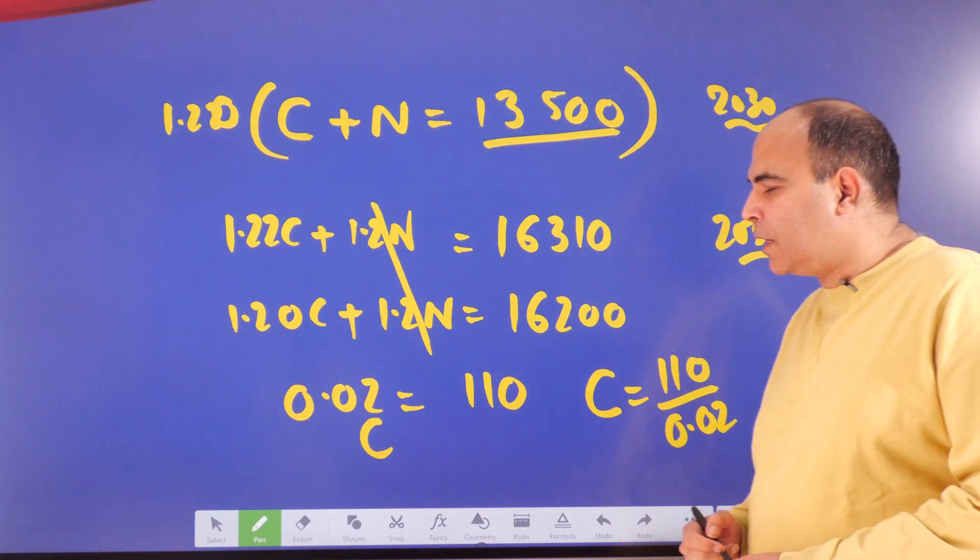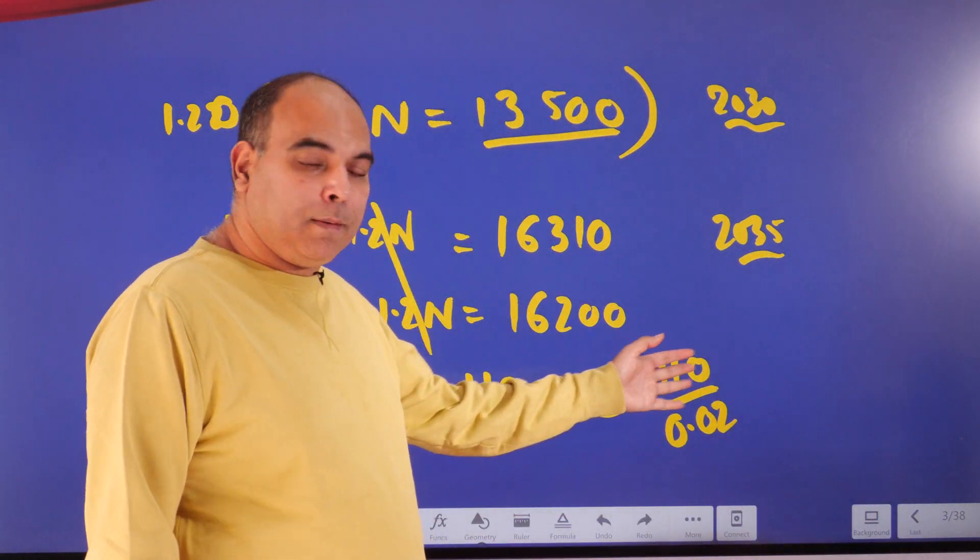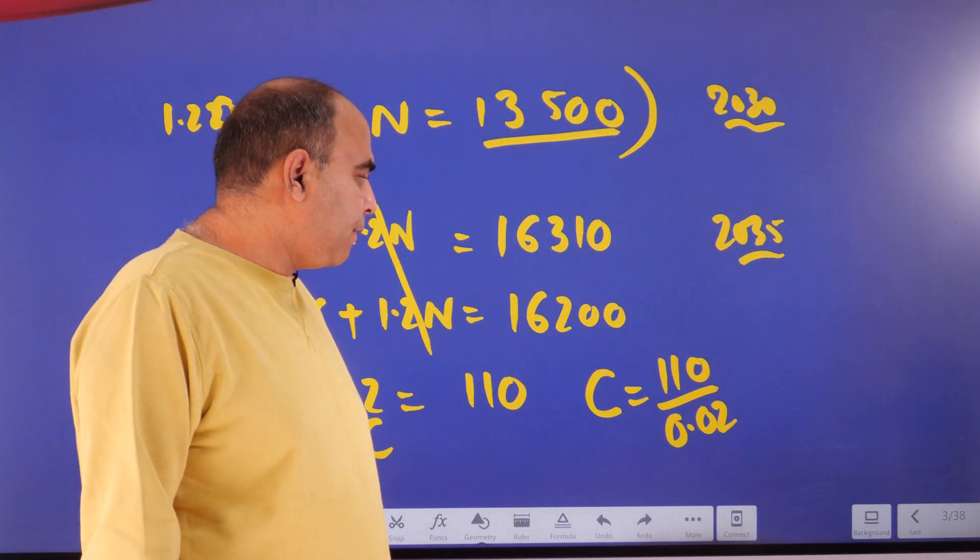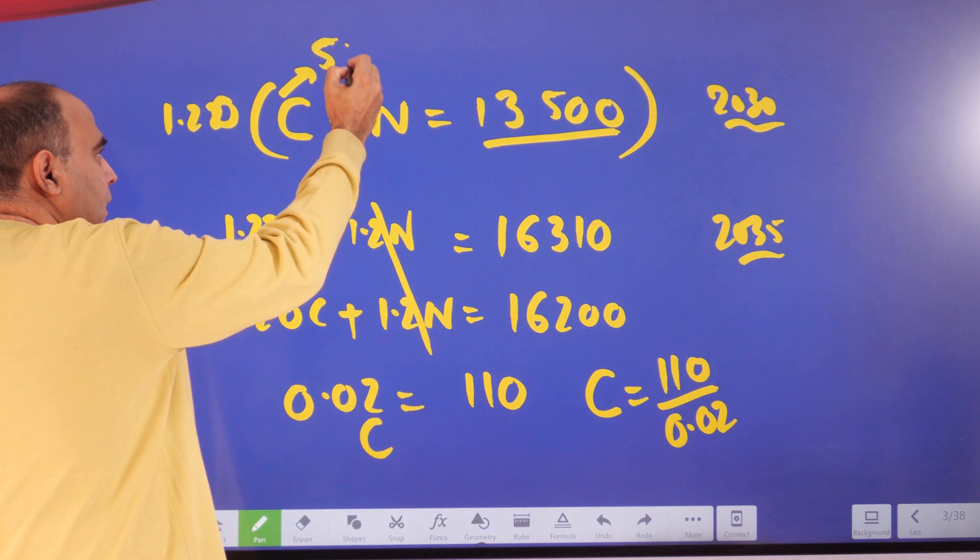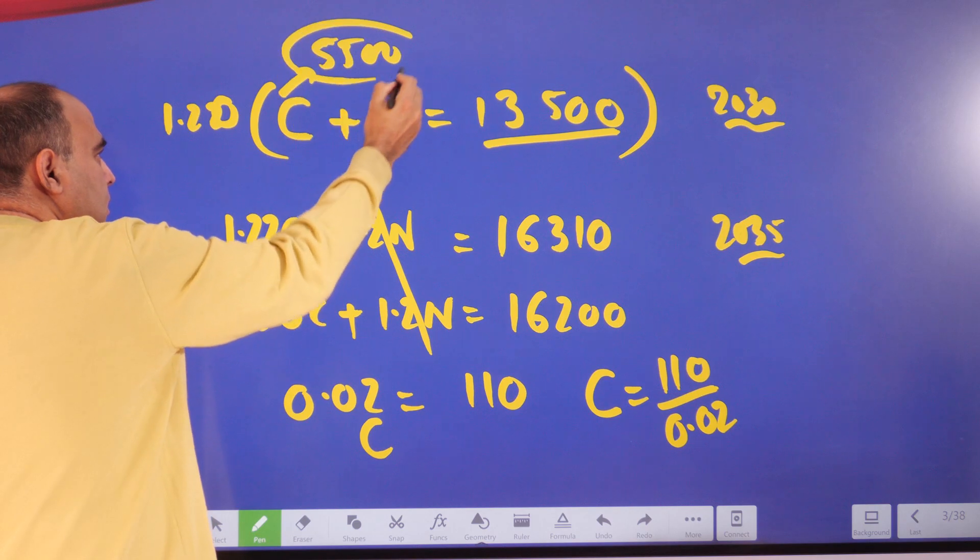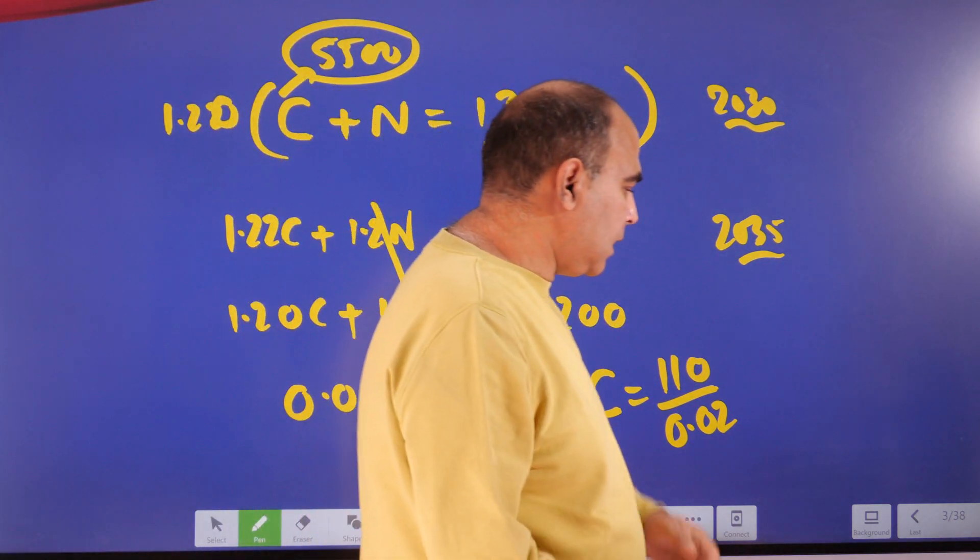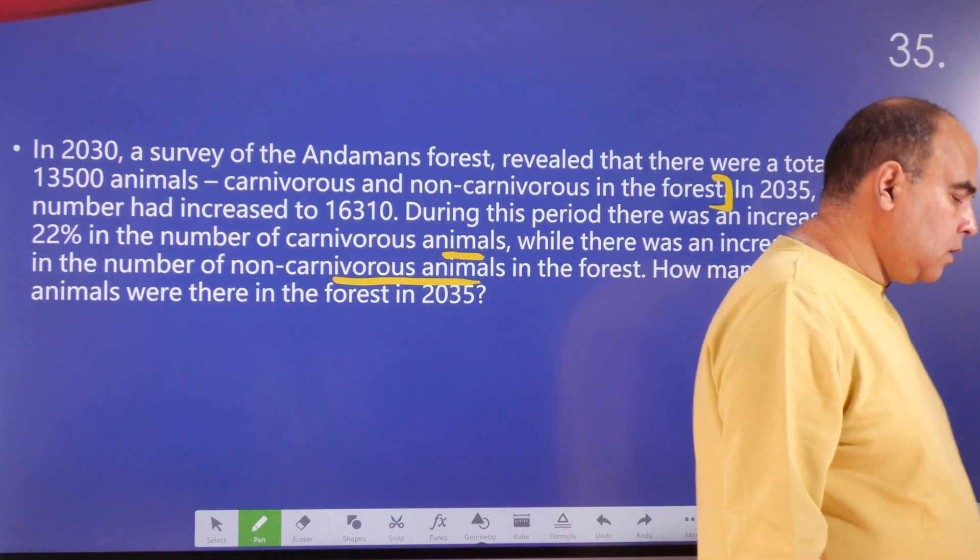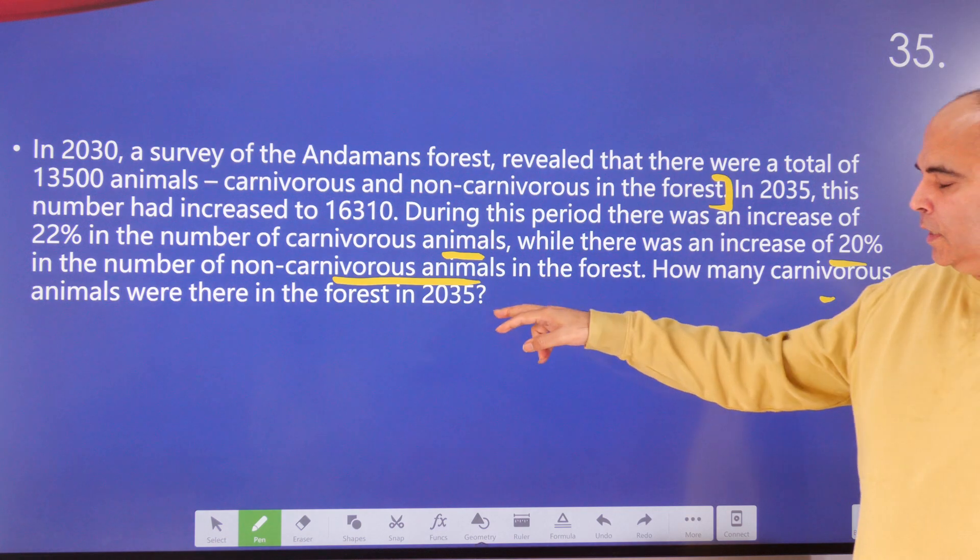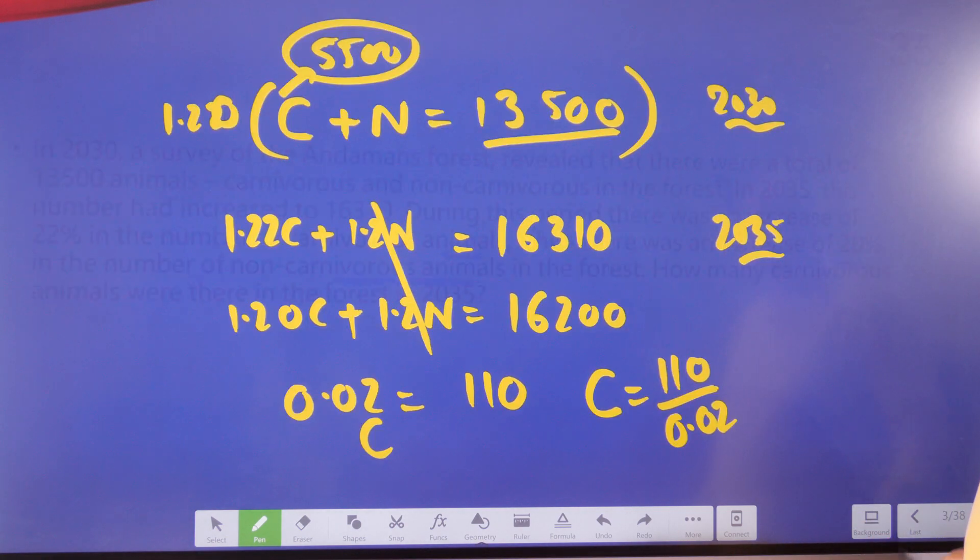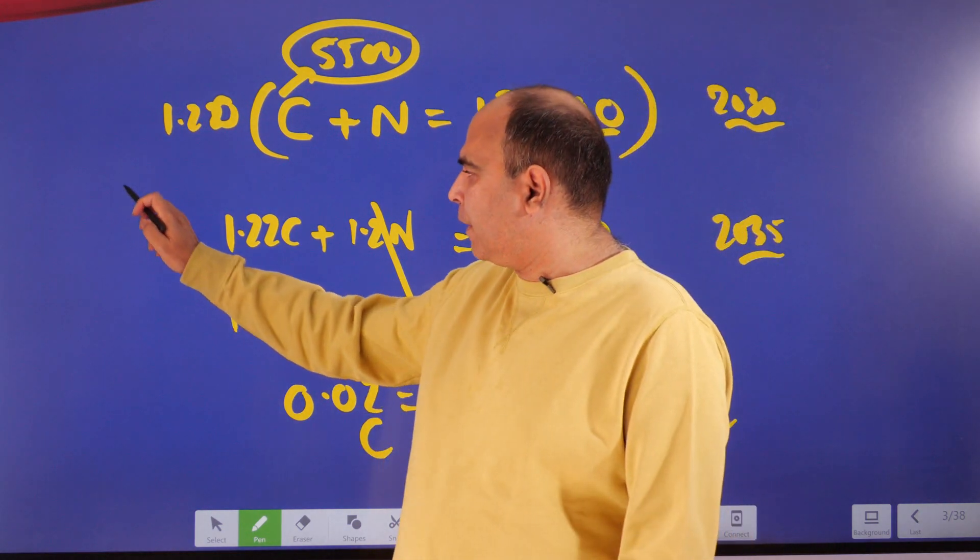Dividing by 0.02 is the same as multiplying by 50. So if you multiply this number by 50, 110 by 50, you will get 5,500. The value of C will come out to be 5,500. But they have not asked us the value of C carnivorous animals in the forest in 2035, so for that, one last step will have to be done.